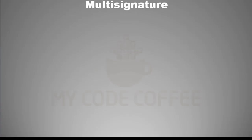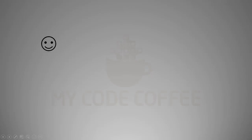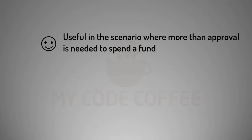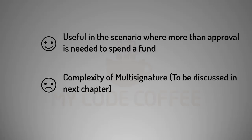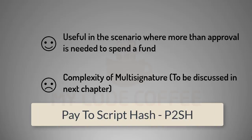This multi-signature feature of Bitcoin blockchain is very useful in scenarios where you want more than one person to approve a transaction. This is a common situation in corporates and big companies where you need approval from the board before spending the fund. But this useful feature comes with a cost — the complexity of multi-signature.